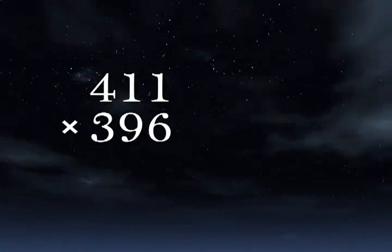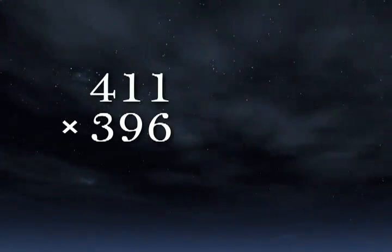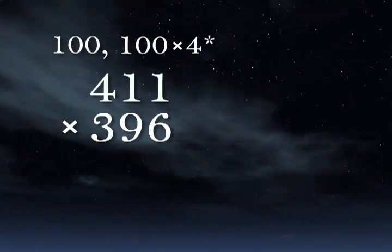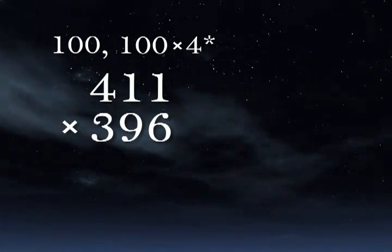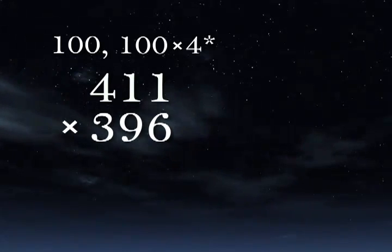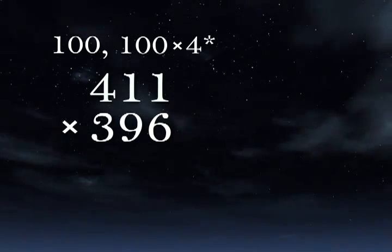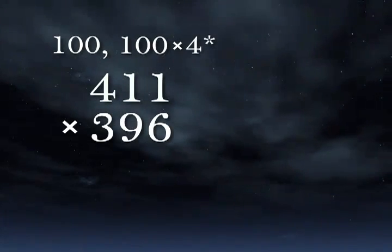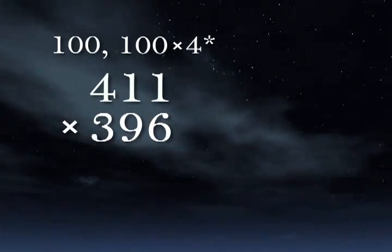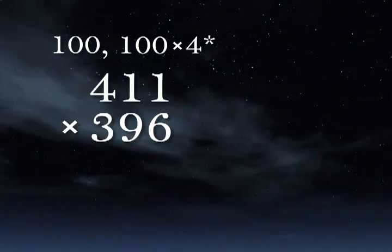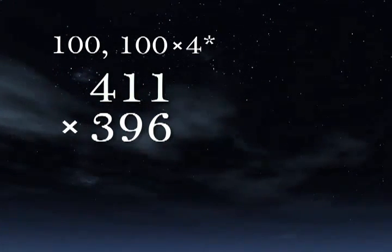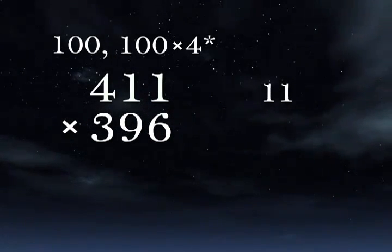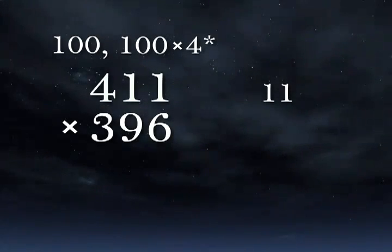Here again, the numbers are not close to 10 or 100 or 1000. Let's use actual base 100 and working base 100 times 4. The working base is 400, but it's written as 100 times 4. That's to remind us to multiply the left side by 4. 411 is 11 more than 400, our working base, so we write 11. 396 is 4 less, so we write negative 4.